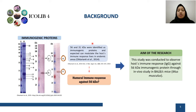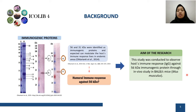A previous study reported the 56 and 31 kilodalton proteins as immunogenic proteins, expected to modulate the host immune response in endemic areas. However, the humoral immune response against the 56-kilodalton protein is still unknown. Therefore, the aim of this research was to observe the host immune response against the 56-kilodalton immunogenic protein through a study in BALB/c mice.